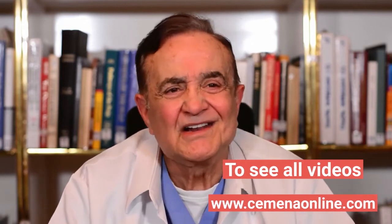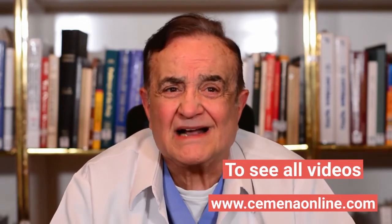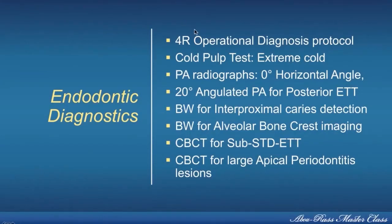All of these factors are limitations discussed in Unit 1. When it comes to research evidence, clinical outcomes, patient satisfaction, and practice management, the best practice in endodontic diagnostics is the 4-hour operational diagnosis protocol. The only test we use is the cold pulp test. We do not use heat; we do not use electricity. For periapical radiographs, we always use zero horizontal angulation, and we change to a 20-degree angulation only when needed for posterior endodontically treated teeth or to separate the roots.